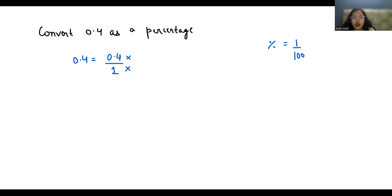So there is one digit after the decimal so I'm going to multiply by 10 in numerator as well as in denominator. So 0.4 times 10 is 4 and 1 times 10 is 10.